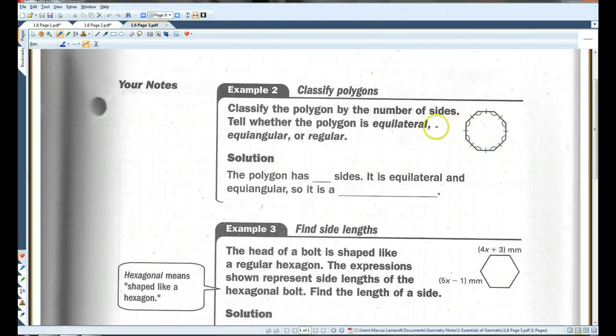Classify the polygon by the number of sides. Tell whether the polygon is equilateral, equiangular, or regular. This polygon has eight sides. It is equilateral and equiangular, so it is a regular.